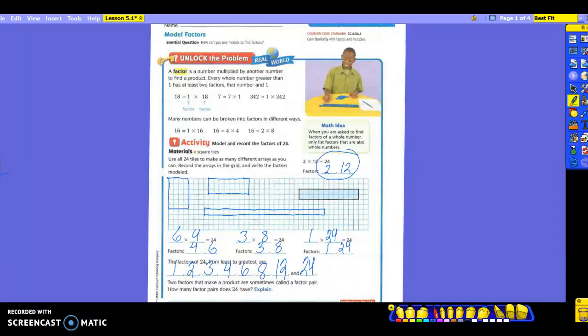So as I list them, if I look at the factors of 24, I have 1, 2, 3, 4, 6, 8, 12, and 24.